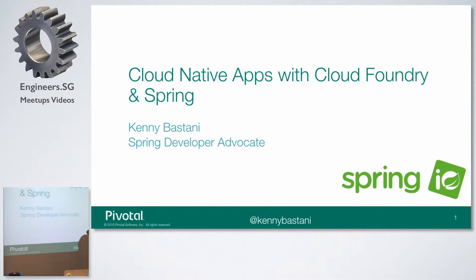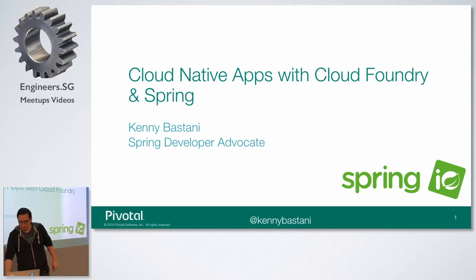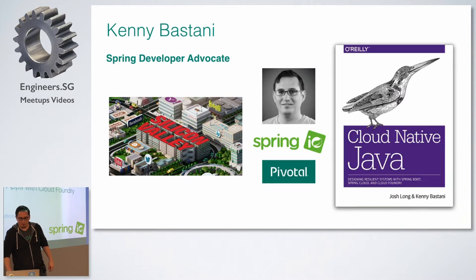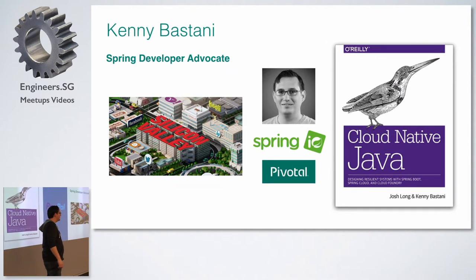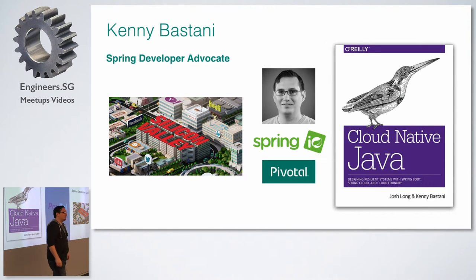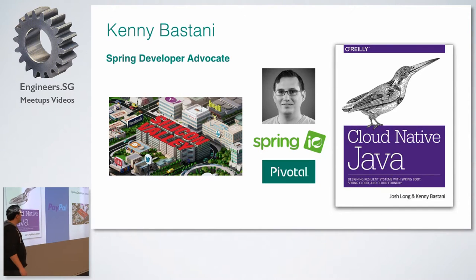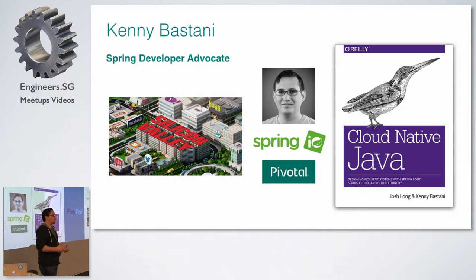If you're here, you're here to hear about cloud native application development with Spring. We're going to be talking about that today, and a little bit of Cloud Foundry as well. I'm Kenny Bustani. I am a Spring developer advocate at Pivotal on the Spring team. I joined back in September. Before that, I was at Neo4j, the graph database company, as well as Digital Insight. I'm writing a book right now with developer advocate Josh Long. It's called Cloud Native Java, from O'Reilly. You can get an early release of it today. This book is all about building cloud native JVM applications and microservices using Spring Boot, Spring Cloud, and Cloud Foundry.